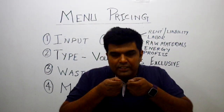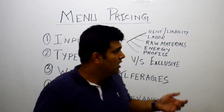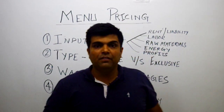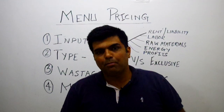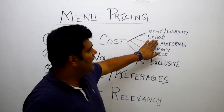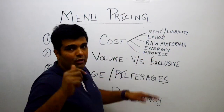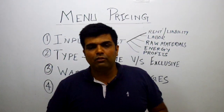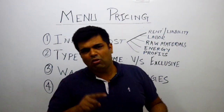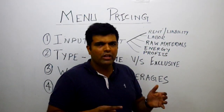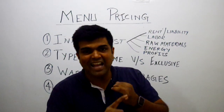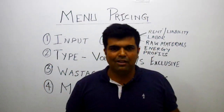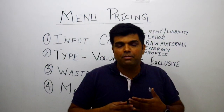Each item you serve carries all these costs when it goes to the customer. First is your rent — how much rent are you paying for the place? If the rent is very high and you're selling food cheaply, you will go into losses. Second is labor cost — your staff salaries and daily wages. Third is raw material cost — your oil, salt, masalas, vegetables, non-veg items, whatever you're cooking. And also your energy cost — how much gas and electricity is required.